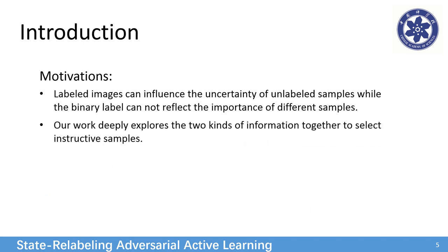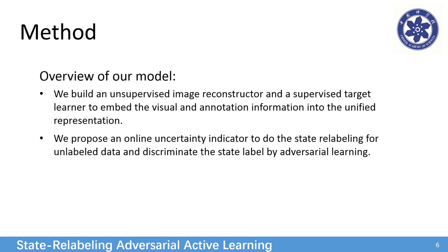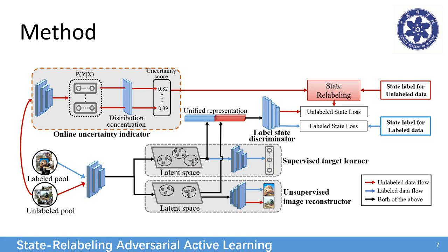Secondly, we attempt to facilitate both the two kinds of information for active learning. Thus, we design a State Relabeling Adversarial Active Learning model. We build a reconstructor and a target learner to obtain a unified representation, and we introduce Adversarial Learning with a State Relabeling Model.